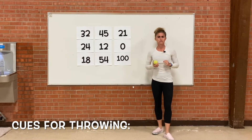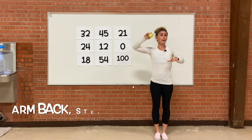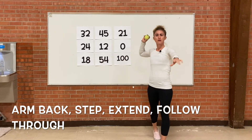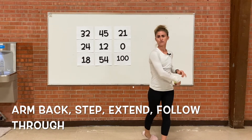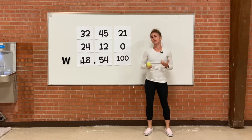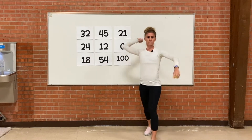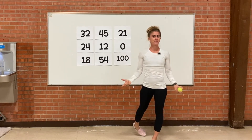Now remind me the cues for throwing. We've got the ball in hand, we take our arm back, we step, we extend our arm, and we follow through. And whenever we follow through, where do we follow through? At the target!